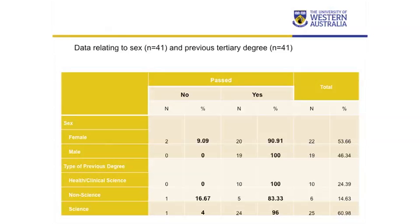Looking at prior degree, students with a health sciences background had a 100% pass rate. Those with non-science degrees passed at approximately 83%, while students with science degrees passed at around 96%.